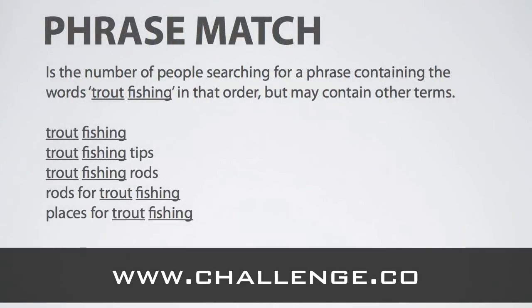Phrase match on the other hand is slightly different. It is the term 'trout fishing' in that word order but it can be surrounded by other words. For example: 'trout fishing', 'trout fishing tips', 'trout fishing rods', 'rods for trout fishing', 'places for trout fishing'. As you can see, 'trout fishing' is still in the same word order but has other words surrounding it.